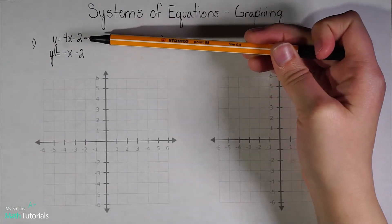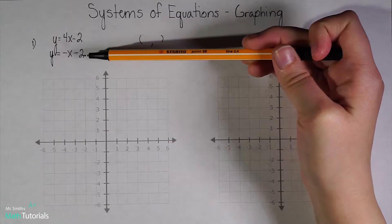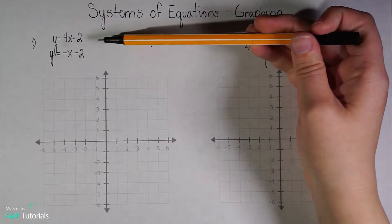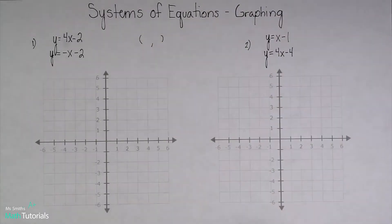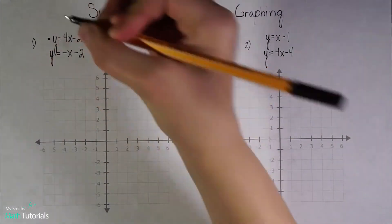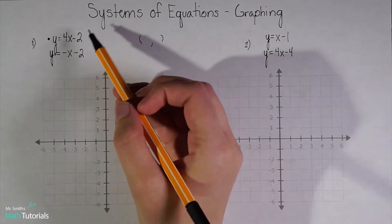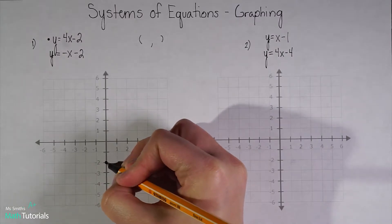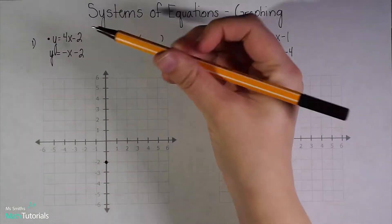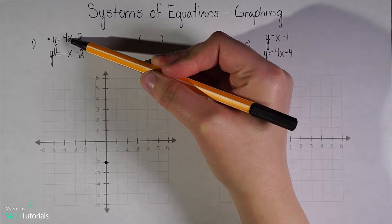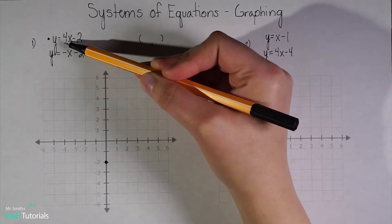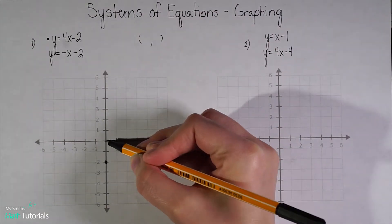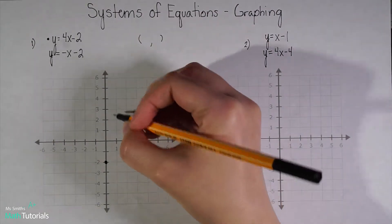In the first example, you always want to check that your lines are both in y equals mx plus b form. In this case they are, so we can graph them. I'm going to graph my first line in black. I plot my first point at negative 2 — that's my y-intercept. My slope tells me how to move from there. This is a positive 4, which is the same as positive 4 over 1, so we move up 4, over 1.